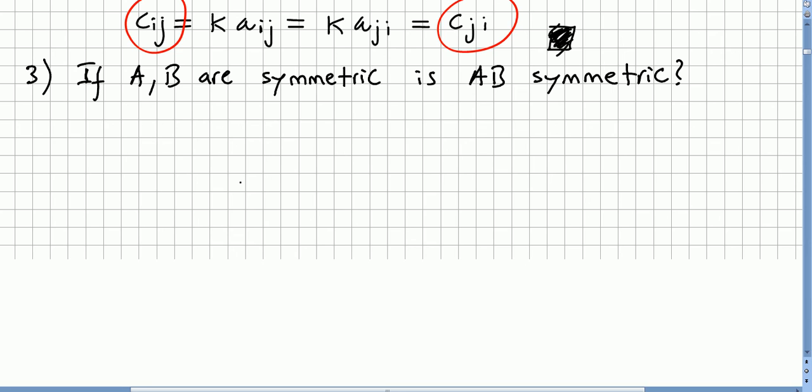So the third problem is a bit different. The question is, if A is symmetric and B is symmetric, is AB, so the product of two symmetric matrices, also a symmetric matrix? Well, in general, that will not be true. So we have to find a particular A and a particular B that are symmetric and where AB is not symmetric.